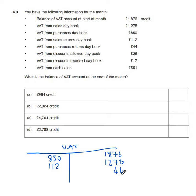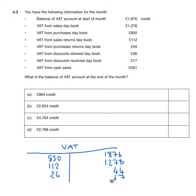VAT from the discount allowed day book goes on the debit side, so 26 pounds goes on the debit side. VAT from the discount received day book goes on the credit side — 17 pounds on the credit side. VAT from cash sales is the same as the sales day book; it's money we owe HMRC, so 561 pounds goes on the credit side.